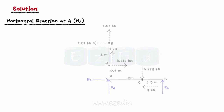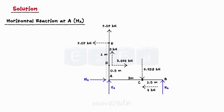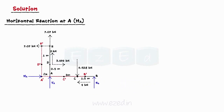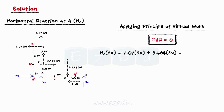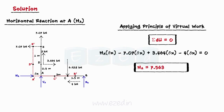Next, we will find the horizontal reaction at point A. We will now impart a small virtual horizontal displacement δx about the x-axis as shown in the figure. Applying the principle of virtual work, we get summation dU equal to zero. On substituting the forces and their virtual horizontal displacement δx and then simplifying, we get horizontal reaction at A equal to 7.563 kN acting to the right.